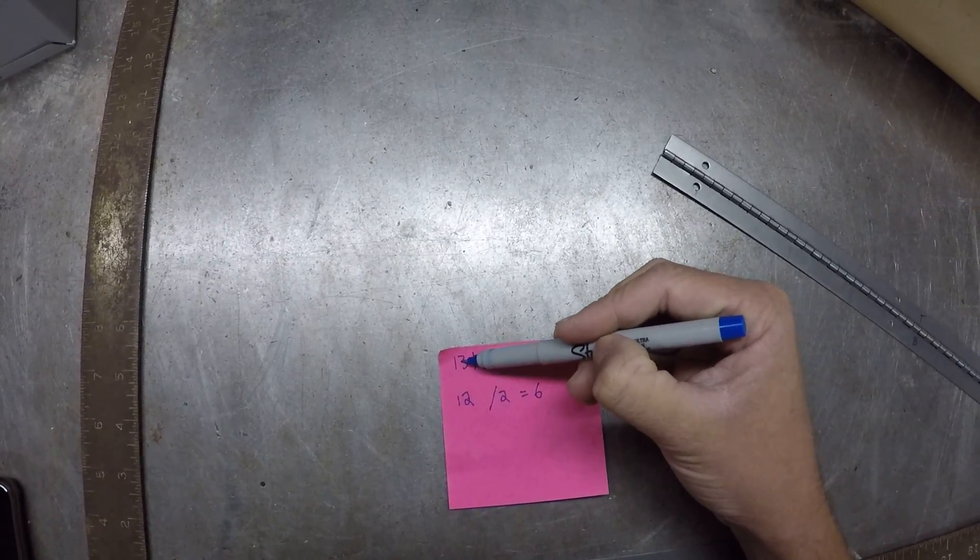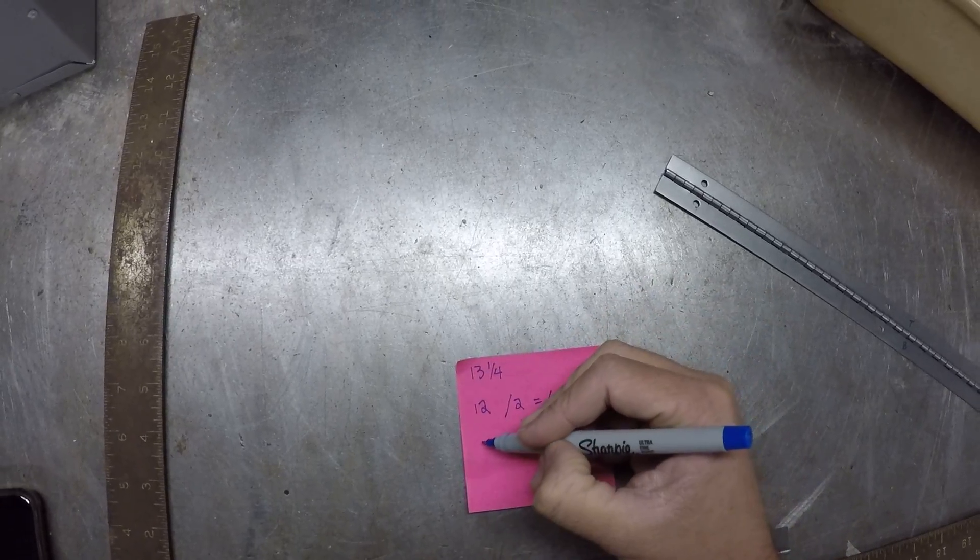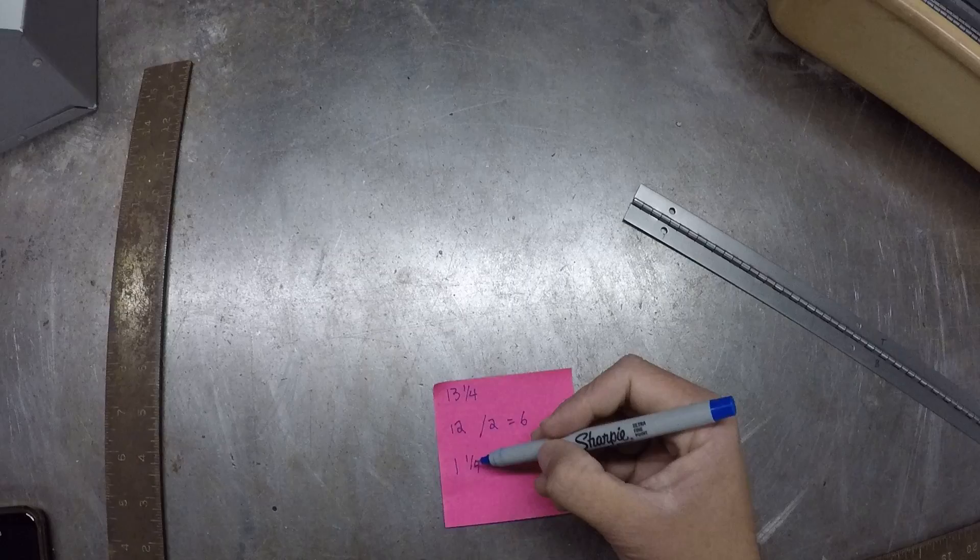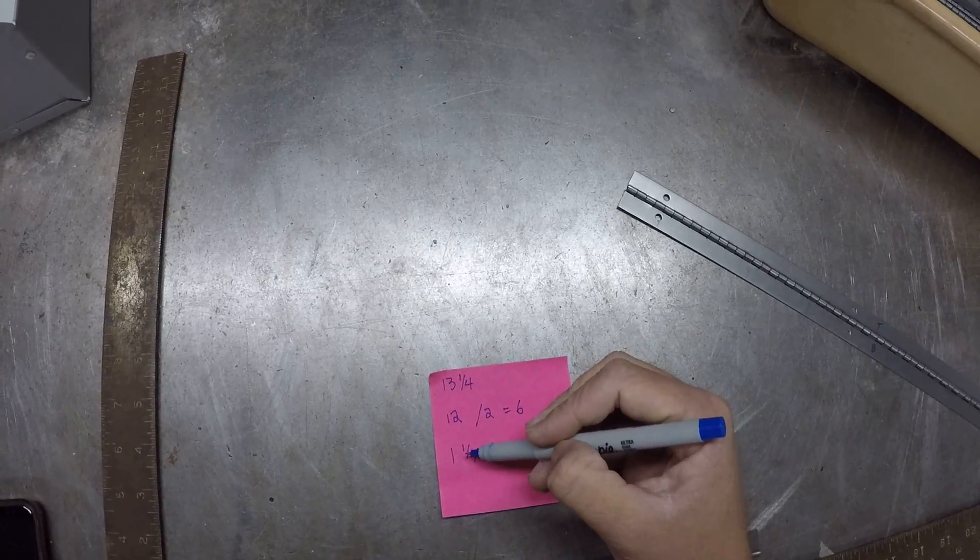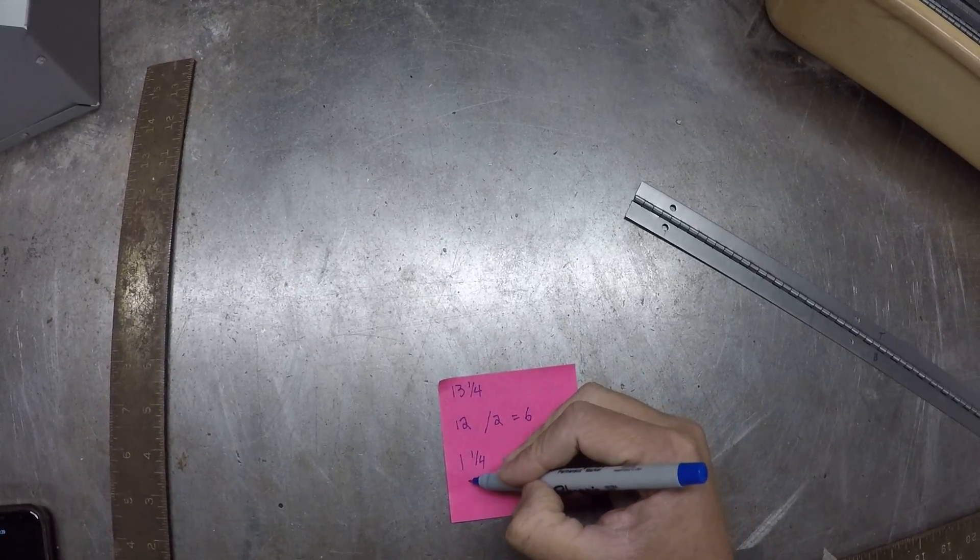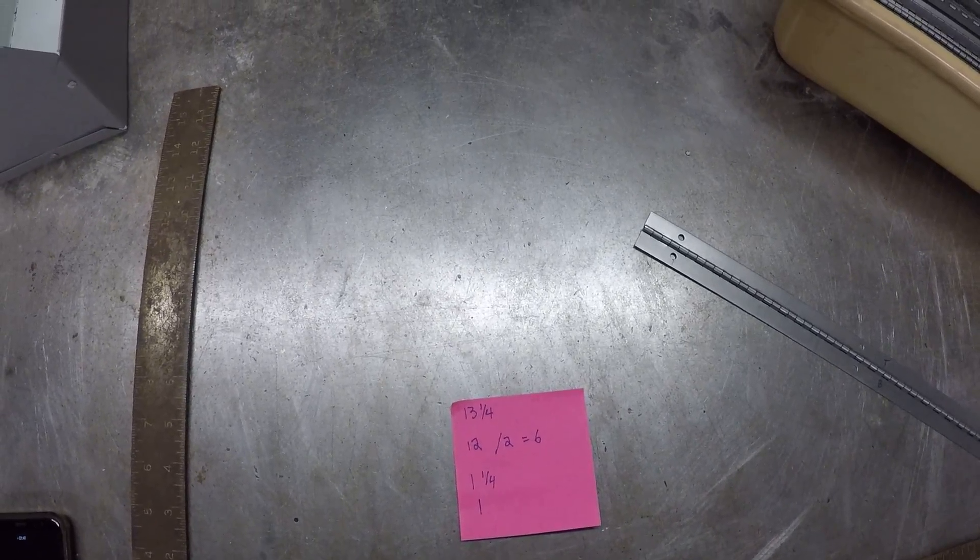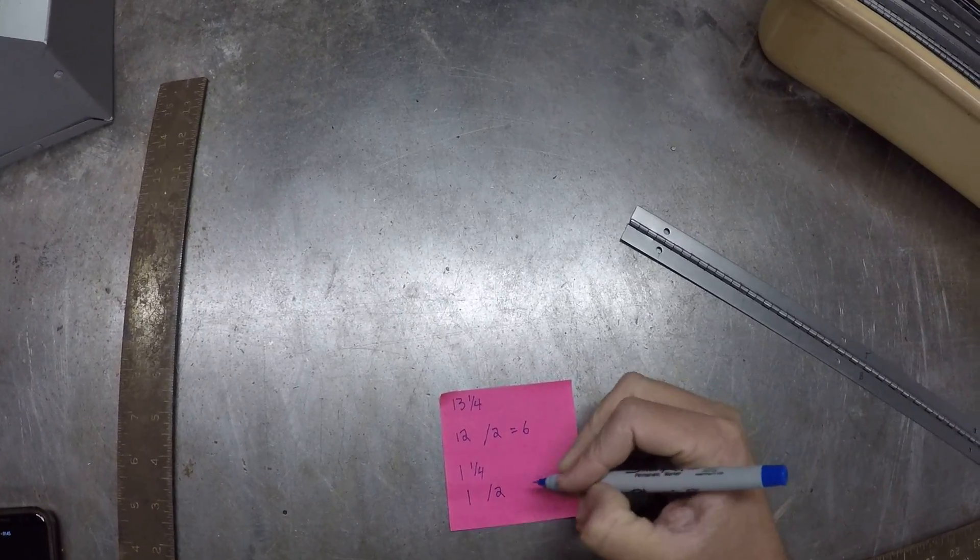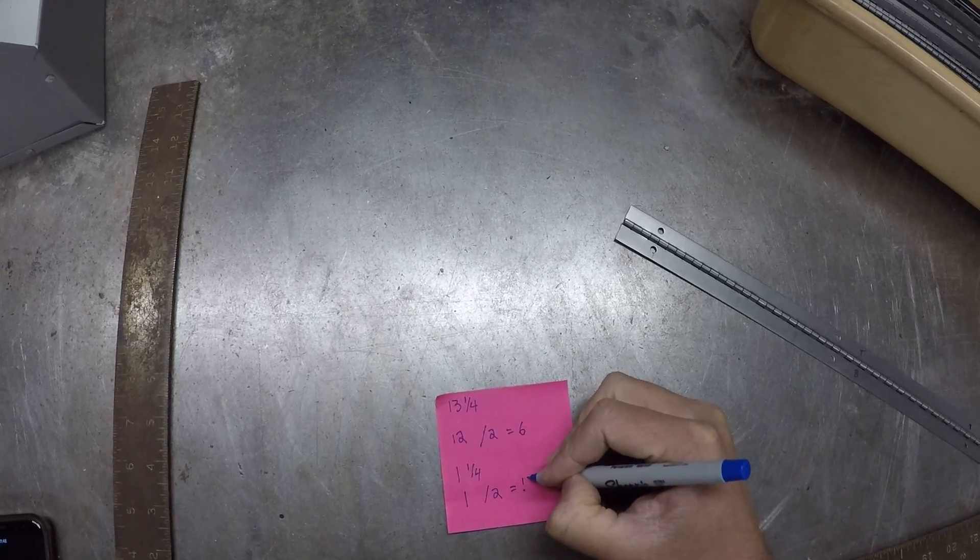Now to get from 12 to 13 though, I'm still missing an inch and a quarter. So with my remaining inch and a quarter, I would drop off the quarter inch and I would just work with the whole right now.